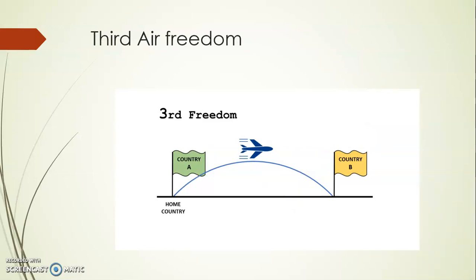The Third Air Freedom is related to countries A and B. The airline of country A may take passengers to country B. For example, an Indian airline can take passengers from India to France, India to the USA, or India to Dubai — any country. It can take passengers from India to another country, which is known as the Third Air Freedom.